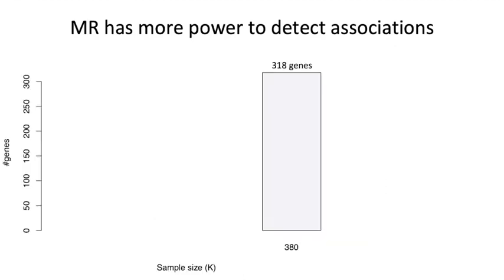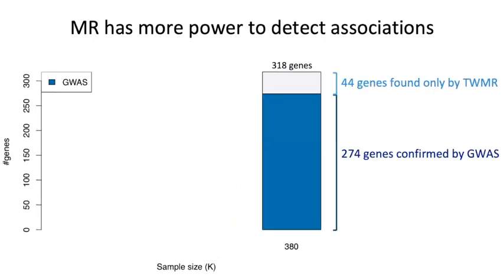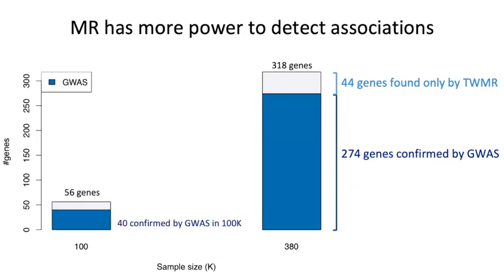More generally, using the complete dataset of British unrelated individuals from UK Biobank, we found 318 genes associated with BMI, and 44 of them were found only by TWMR — completely missed by GWAS. To assess whether those genes were meaningful, we looked at results from a smaller dataset of 100K individuals, where we found 56 genes associated with BMI. Forty of them were already confirmed by GWAS in the same dataset, but importantly, 13 additional genes were confirmed by GWAS performed in the complete UK Biobank dataset.